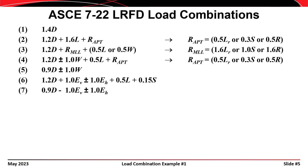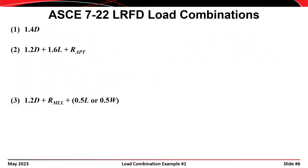This can be a bit confusing at first since we're using R to denote the rain load in some cases and then using R to denote the roof load in other cases. After you work through a couple of examples, the utility of this approach should become apparent. Now we're going to consider the possibility that some of the transient and environmental loads may not be acting on the structure at any given time.